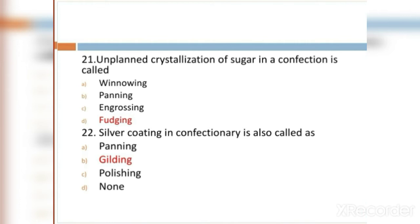MCQ 22: Silver coating in confectionery is also called as: Option A: panning. Option B: gilding. Option C: polishing. Option D: none. Option B, gilding, is the right answer.